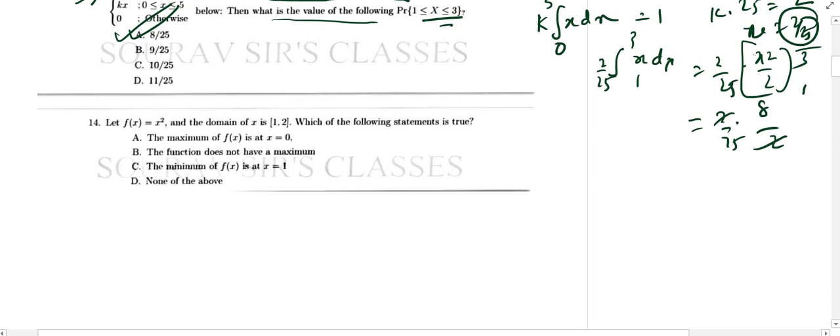If x equal to x square domain of x is 1 to 2. Which of the following statement is true? So if x equal to x square the domain is from 1 to 2. Maximum value if x is at x equal to 0. So the function doesn't have a maximum value. So let's do it. f dash x is 2x. f double dash x is 2. So this is greater than 0. So this has to have a minimum structure. So as it is minimum.